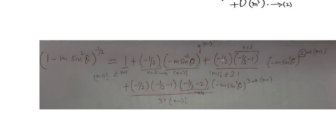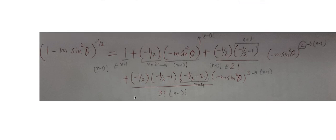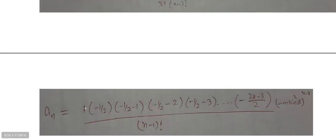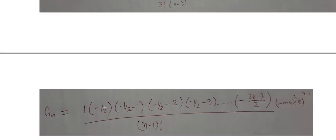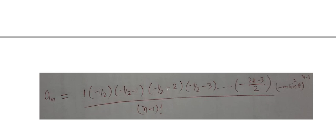The third term involves coefficients (−1/2)(−1/2 − 1). Let's look at how to write these coefficients: first term 1, second (−1/2), third (−1/2)(−3/2) — because −1/2 − 1 = −3/2, fourth (−1/2)(−3/2)(−5/2) — because −1/2 − 2 = −5/2, and fifth (−1/2)(−3/2)(−5/2)(−7/2).